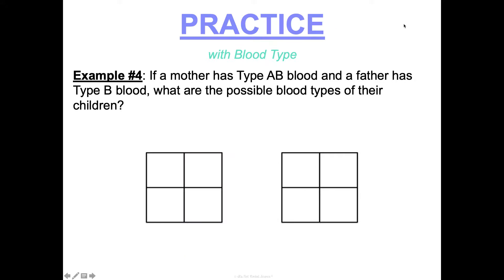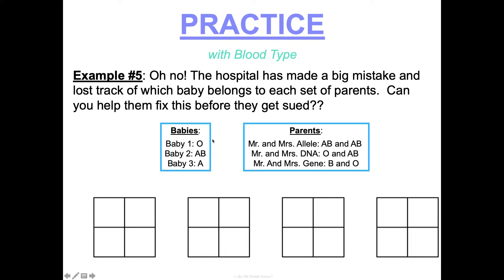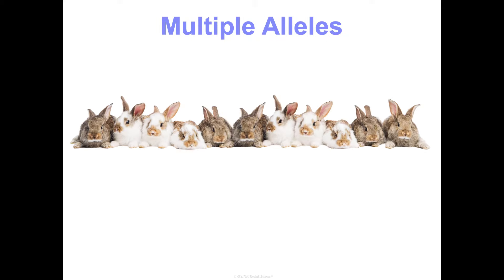Let's do some practice. If a mom has type AB blood and a dad has type B blood, what are the possible blood types of their children? Notice there are two Punnett squares — mom's genotype must be AB, but dad's phenotype of type B could mean he's BB or Bi, so you need to do two Punnett squares: one with dad as homozygous BB and one as heterozygous Bi. Then apply that to figure out which babies belong to which parents.